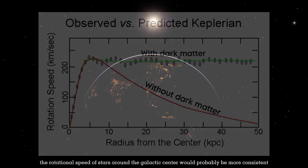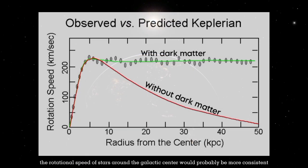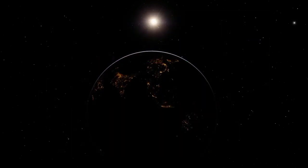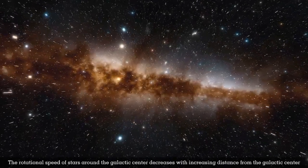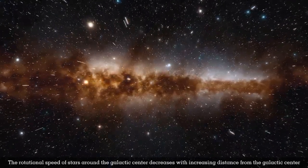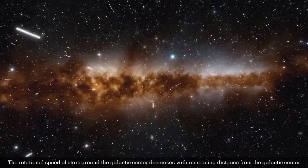If we assume that dark matter does not exist, then in that scenario, the rotational speed of stars around the galactic center would probably be more consistent with the gravitational principles described by Newton's laws than with the gravitational effect attributed to dark matter. The rotational speed of stars around the galactic center would decrease with increasing distance from the galactic center.